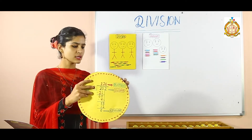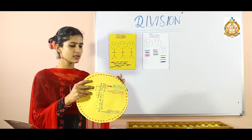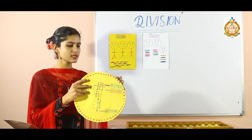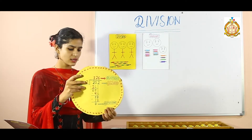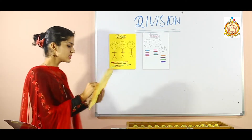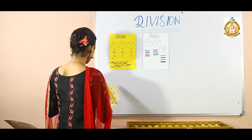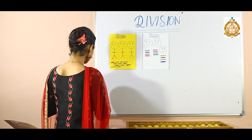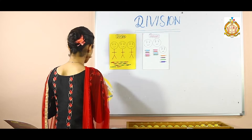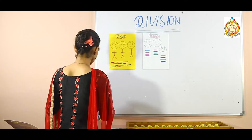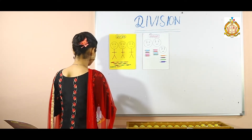So division consists of four parts: the first one is dividend, the second one is divisor, the third one is quotient, and the fourth one is remainder. These four are the different parts of division.